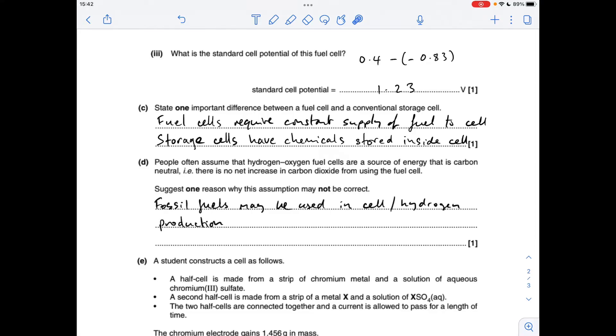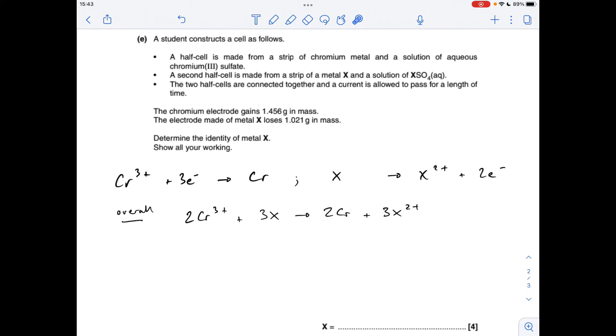Part D, a reason why fuel cells may not be carbon neutral could be that fossil fuels might be used to make the cell or to produce the hydrogen. And finally, part E, quite a rare calculation. Don't really see them with electrode potentials questions.